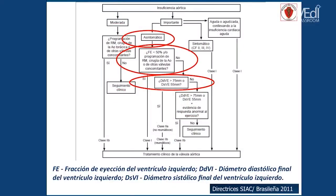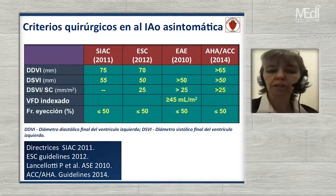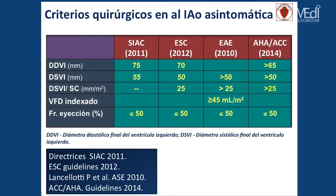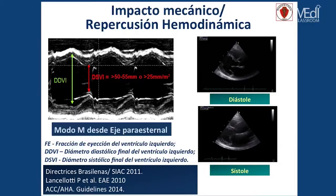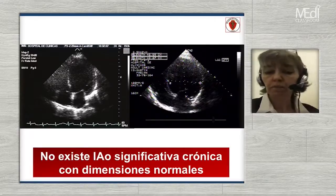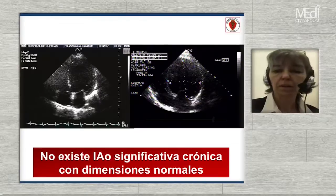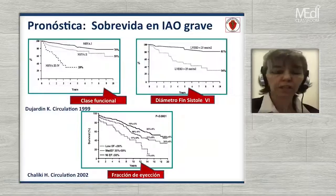Esto es lo que va a determinar la conducta en esta valvulopatía. De todos esos parámetros, tal vez el más importante no sea la dilatación del ventrículo izquierdo en diástole sino el diámetro sistólico del ventrículo izquierdo, dado que éste nos va a determinar cuál es la conducta a seguir. Es muy importante que seamos muy meticulosos con la medición: se mide en el modo M del ventrículo izquierdo. Si no podemos alinearnos perpendicularmente, se medirá en bidimensional. No existe una insuficiencia aórtica significativa sin aumento de las dimensiones.